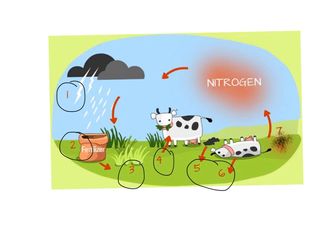Steps five and six kind of go together. At these steps, waste products and dead organisms decompose. This releases nitrogen back into the soil.